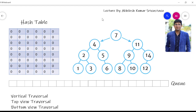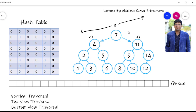Let's understand how the concept of horizontal distance helps in getting these three traversals. We take the horizontal distance of the root node as zero. Nodes towards the left of the root have a lesser horizontal distance, and nodes towards the right have a greater horizontal distance. For example, if 7 is the root and 4 is the left child, the horizontal distance of 4 is minus 1. Node 11 on the right of 7 has horizontal distance plus 1.